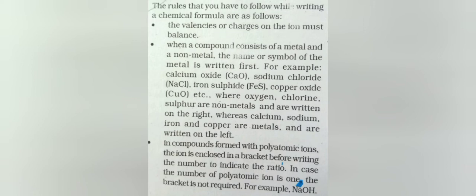In compounds formed with polyatomic ions, the ion is enclosed in a bracket before writing the number to indicate the ratio. When we form compounds that have polyatomic ions inside, we write them in brackets. In case the number of polyatomic ions is one, the bracket is not required. If there is a single polyatomic ion, we don't need to put brackets. For example, in NaOH, we don't need brackets because we have taken only one ion there.